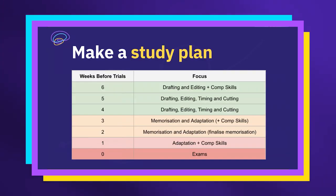The first point is that you need to make a study plan. This is made assuming you have six weeks before your trials, but even if you only have four weeks or five, the way you want to think about making a study plan is to work backwards. That's the first key point — you want to work backwards.